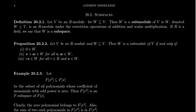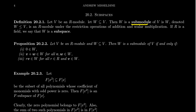Let us continue our review of linear algebra in the broader category of R-modules. Let V be an R-module, meaning V is an abelian group with a ring R acting upon it. If R is a field, this makes V a vector space. Let W be a subset of V. We say W is a submodule of V, denoted W ≤ V, if it is itself an R-module under the restricted operations of addition and scalar multiplication.